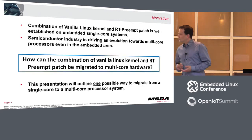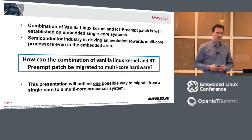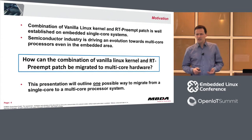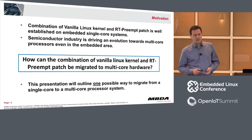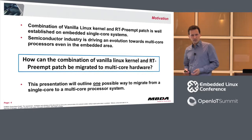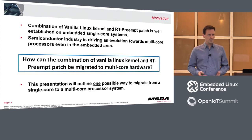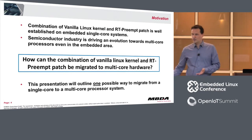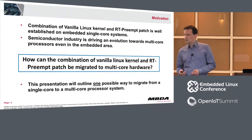The combination of the vanilla Linux kernel and the applied RT preempt patch is nothing new — it's well-established in the embedded area. But on the other side, the semiconductor industry is driving evolution toward multicore. Nowadays it's a big problem to get a single-core CPU for your system. One solution is to take a multicore processor, use one core, and switch off all the others — but you waste all those cores. So the question is: can we use the other cores?